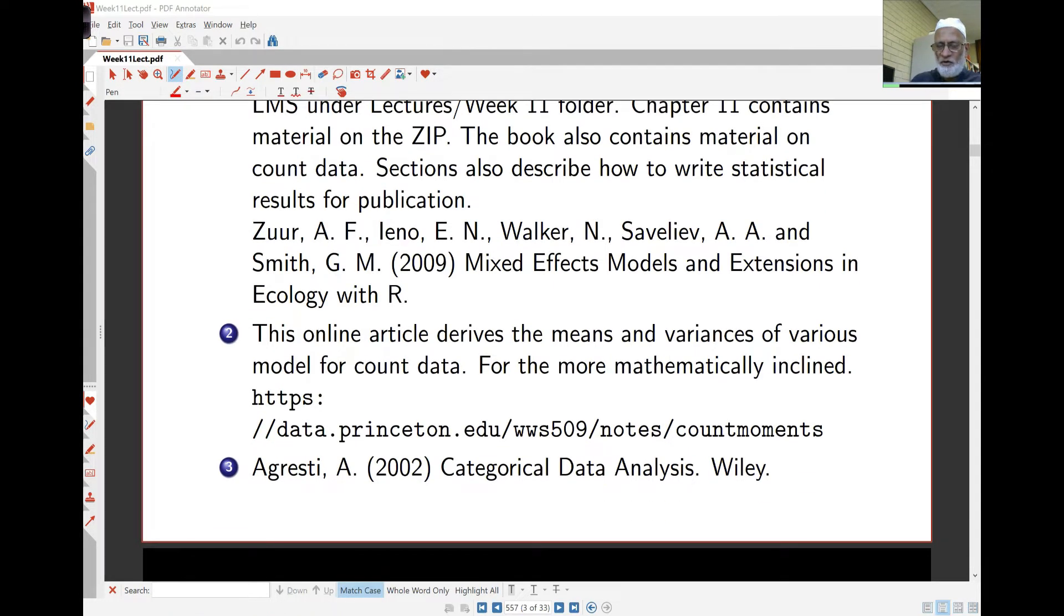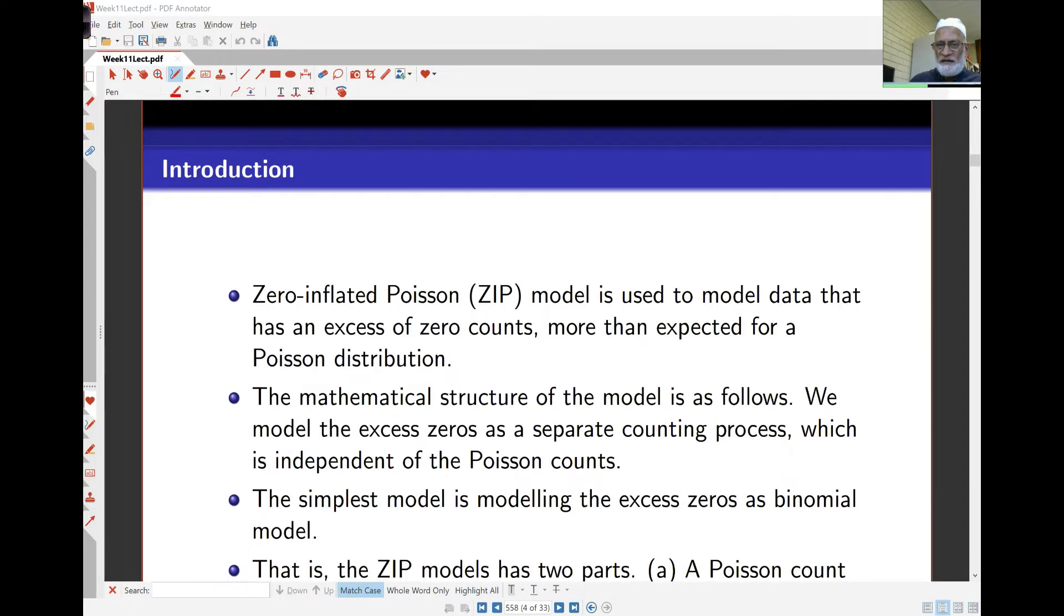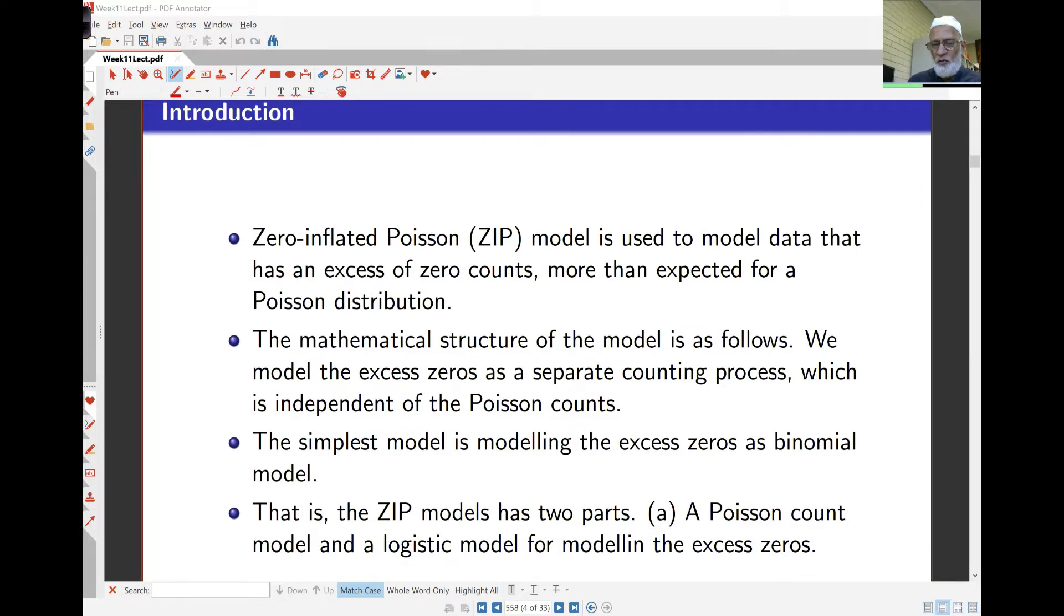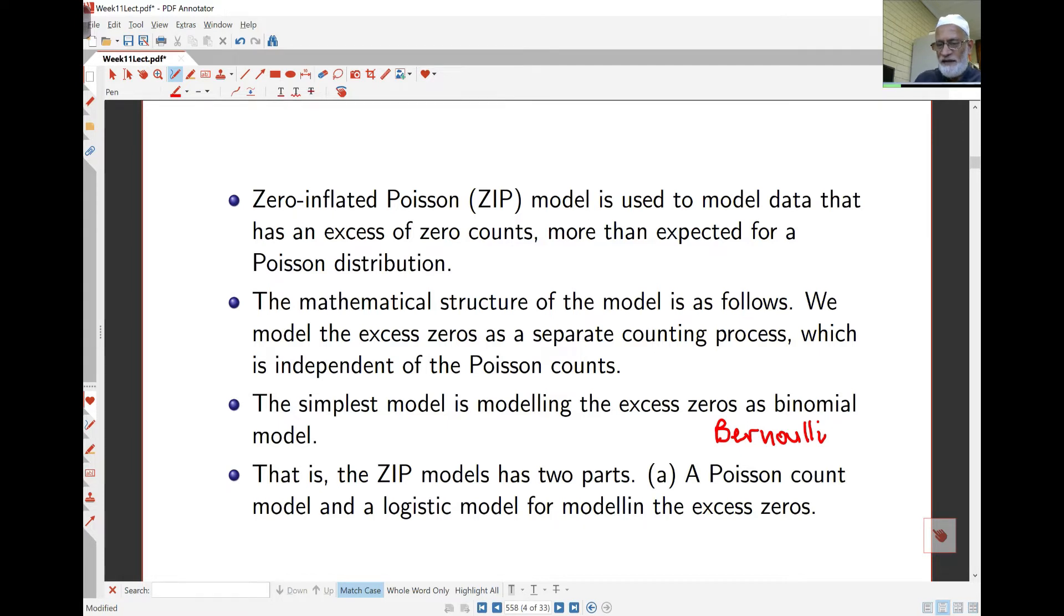There's also another article online that looks at the mathematical aspects of the negative binomial, zero-inflated negative binomial and zero-inflated Poisson models. The idea here is that the zero-inflated Poisson model is used to model data where the excess counts for zero is unexpected or too high for a Poisson model to handle. The mathematical structure here essentially models the zero count separately as well as under the Poisson model.